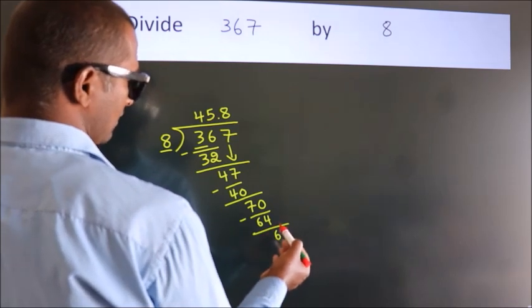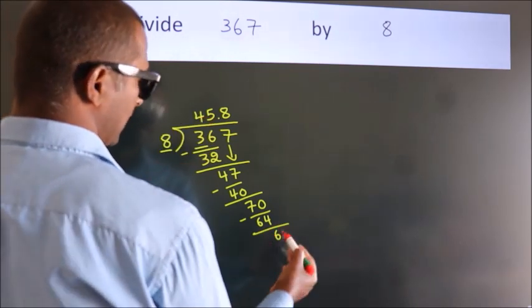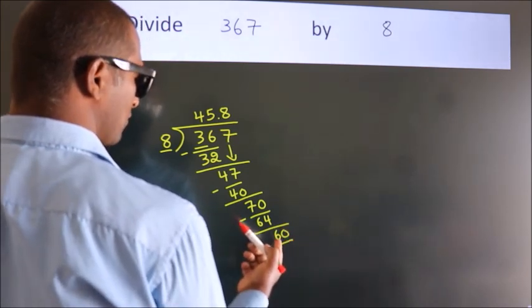After this, we already have the decimal, so directly take 0. So 60, a number close to 60.